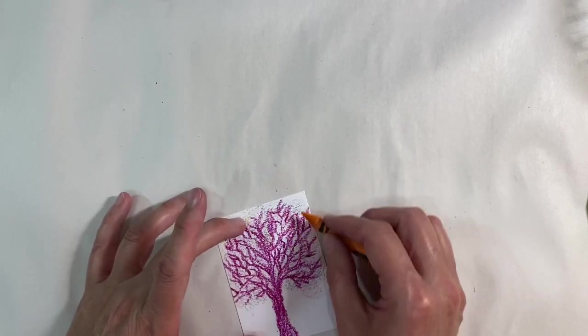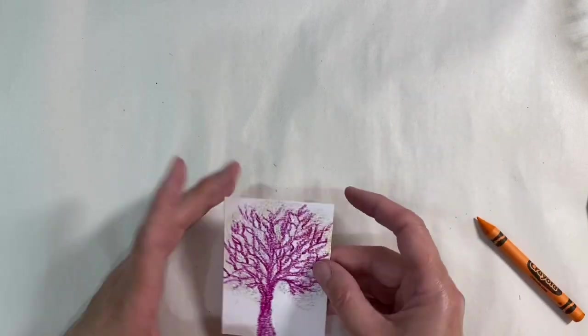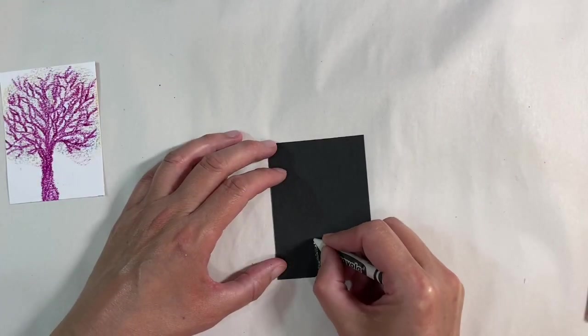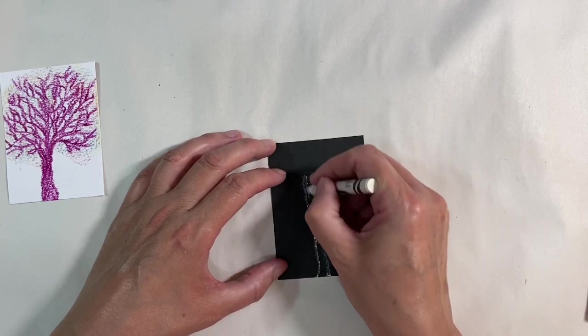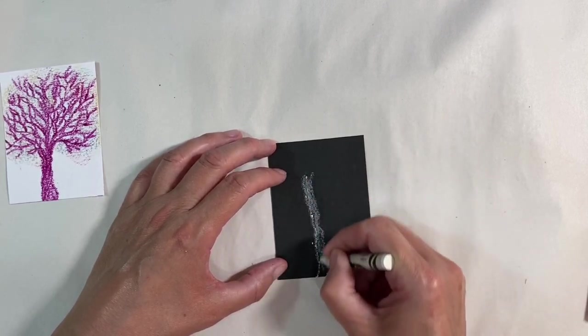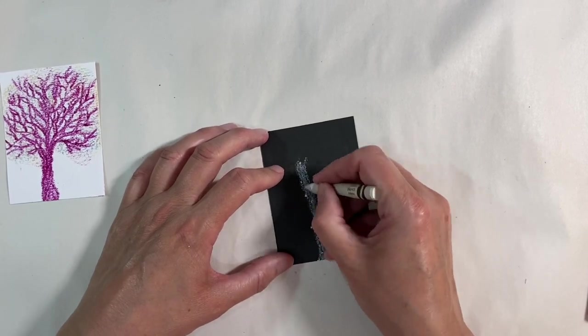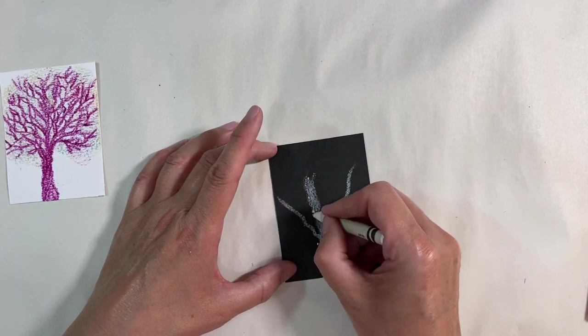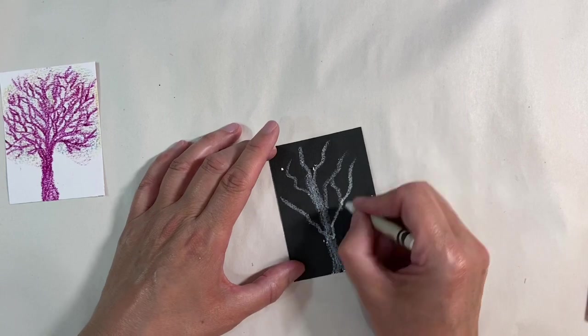And we've got a bit of orange here as well that we can add. Again, just pressing really lightly on the side of my wax crayon. These, as I say, are just the Crayola kids wax crayons.